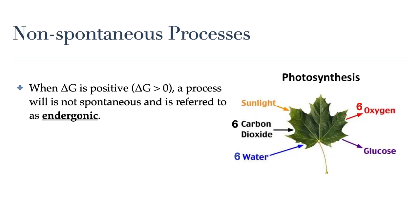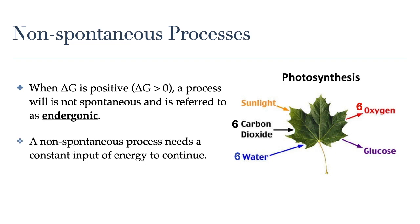Now let's take a look at a non-spontaneous process. When the change in free energy or delta G of a process is positive, it is called endergonic. Endergonic reactions are non-spontaneous, meaning that they need a constant supply of energy to be added in order to continue in the forward direction. Let's take a look at the example of photosynthesis and see how it relates to the Gibbs free energy equation.